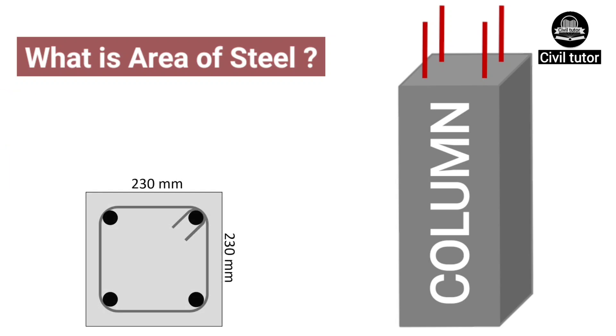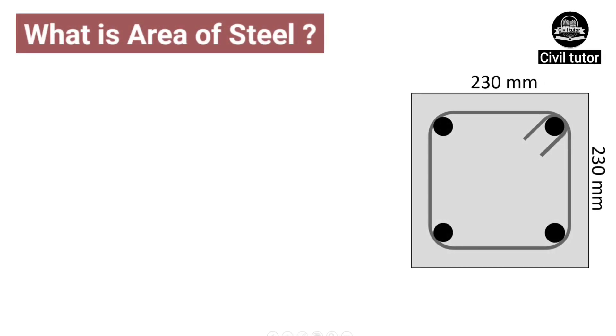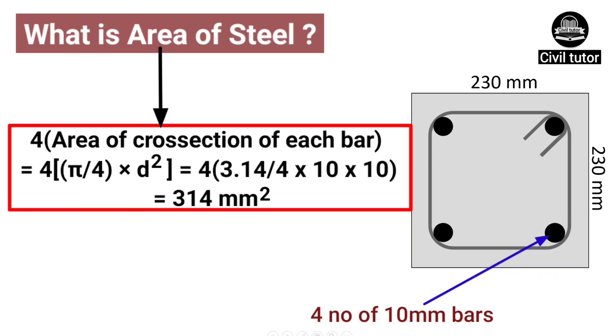By the term area of steel, we mean the total area of cross section of all the steel bars provided in a section. For illustration, if we have a column of size 230 into 230 mm provided with 4 number of 10 mm steel bars, the area of steel for this column will be equal to 4 times the area of cross section of each bar or simply 4 times pi by 4 d square.